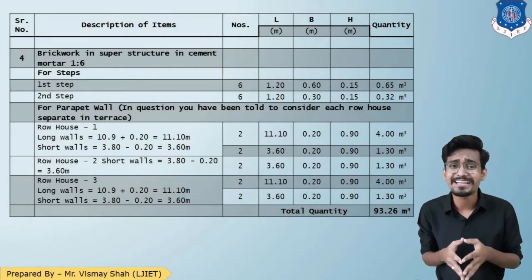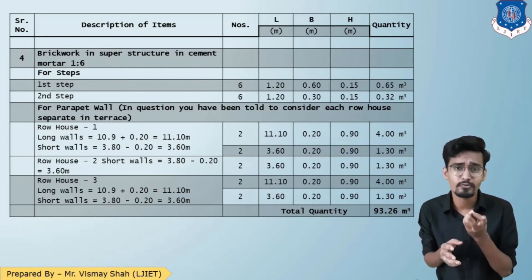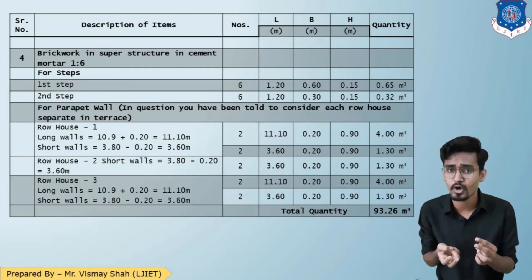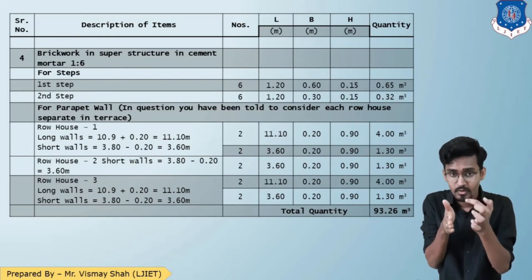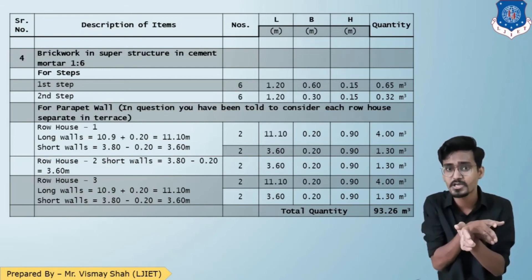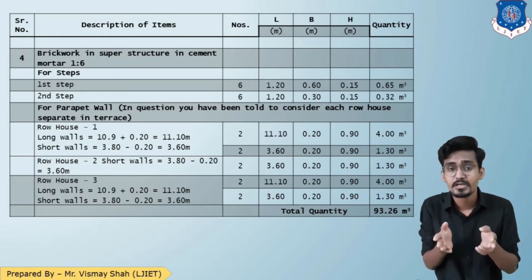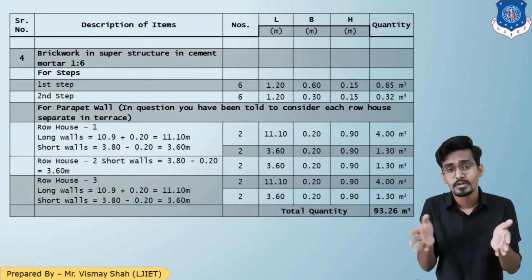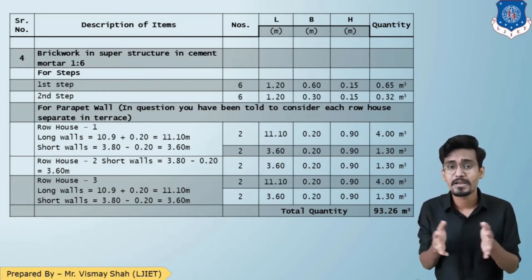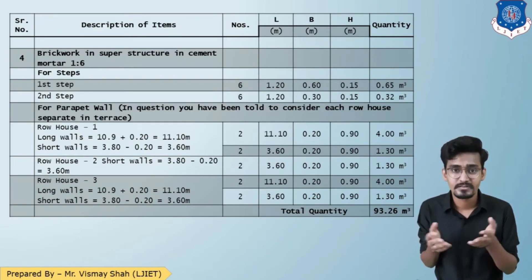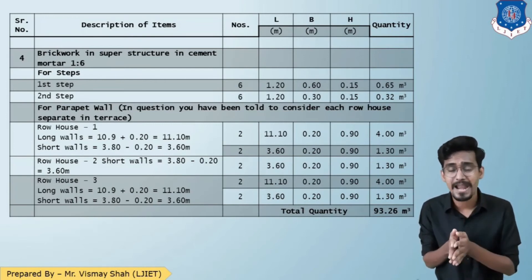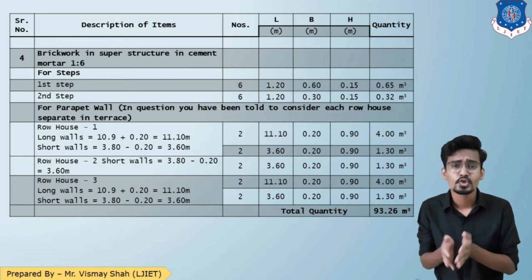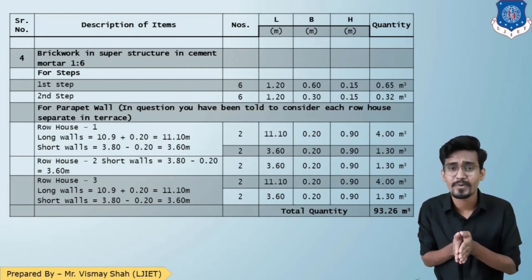At parapet level, each row house is separate on the terrace. Each row house has two long walls and two short walls. For row house two, the vertical walls are shared with row houses one and three; only two horizontal walls are individual. The brick steps have two steps: step one of 0.6 m height and step two of 0.3 m height, based on a riser of 15 cm and tread of 30 cm. Total gross brickwork quantity is approximately 93.26 cubic meters.